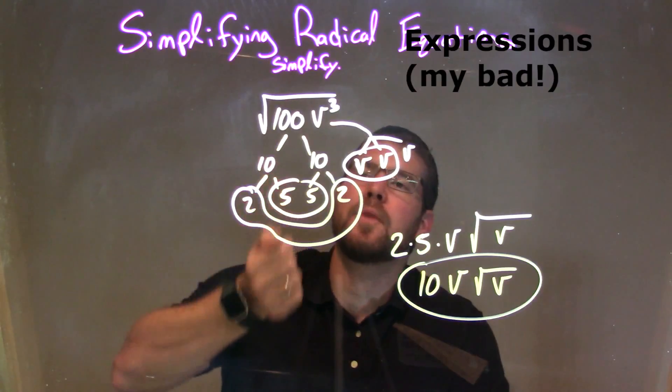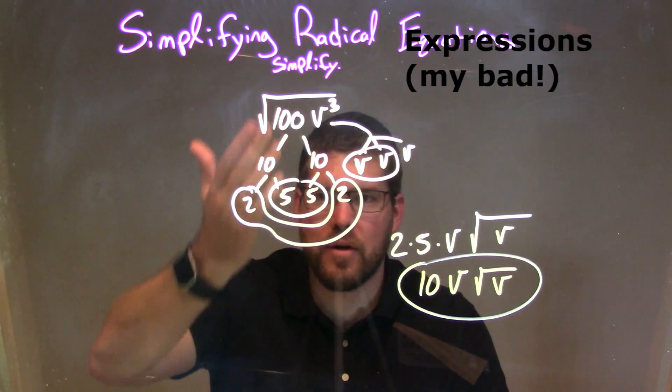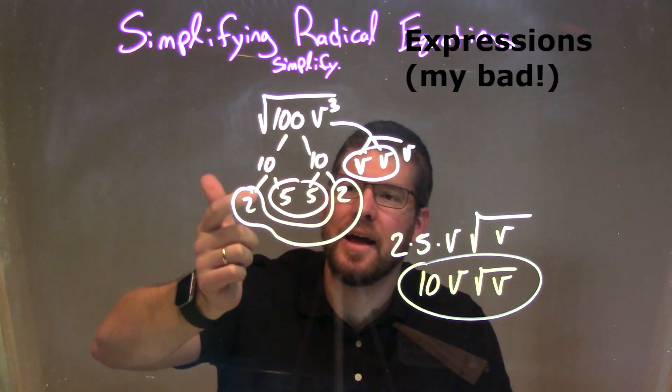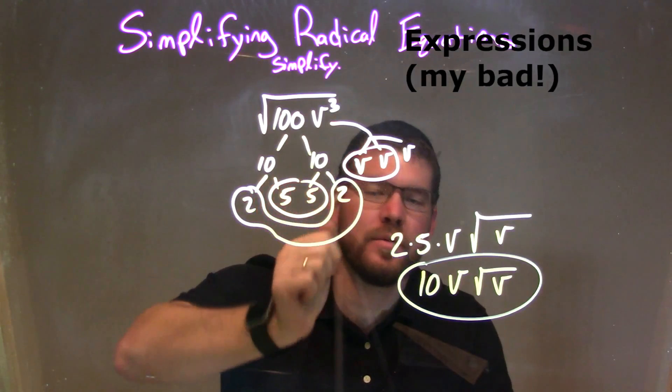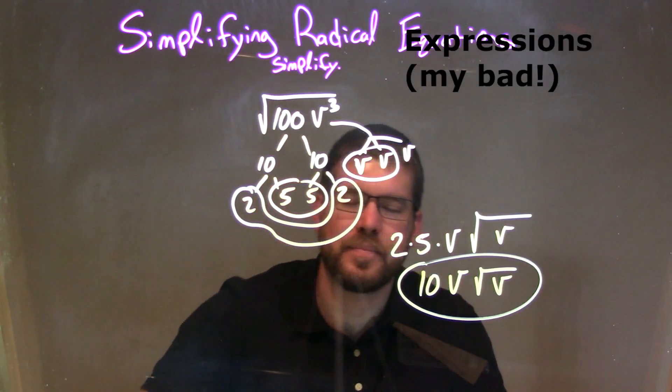So let's recap. We're given the square root of 100 v to the third power. I had to do my prime factorization. When I did that, I had 2 times 5 times 5 times 2 times v times v times v, okay?